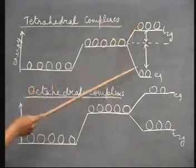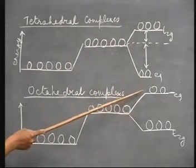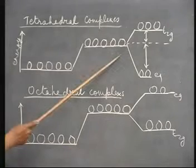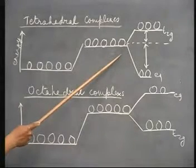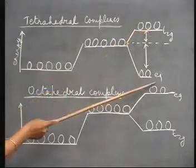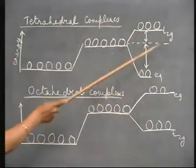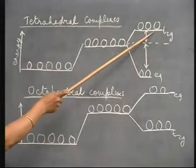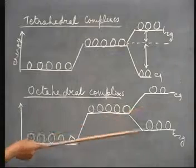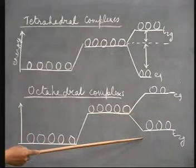This is what happens with coordination number four and this is what happens with coordination number six. In complexes with coordination number four, the d-orbitals break down into two degenerate sets. The t2g orbitals have a higher energy content than the eg orbitals and the reverse is true in the octahedral complexes.